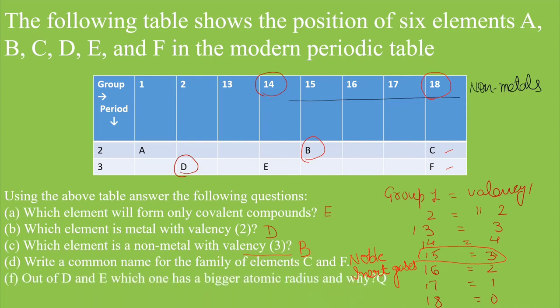Now, next question. Out of D and E which has bigger atomic size. So, children, if we discuss about this one that D and E, when we move from left to right because these two elements are present in the same period. So, when we move from left to right in that situation, atomic size always decreases.